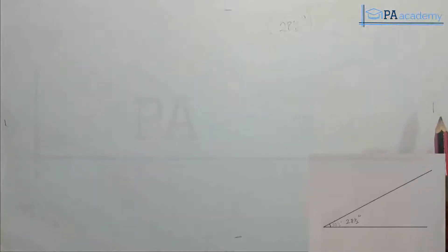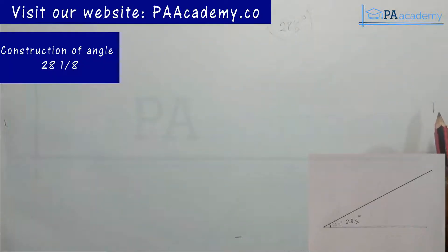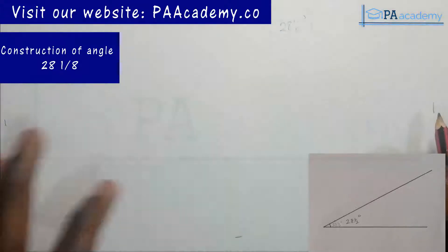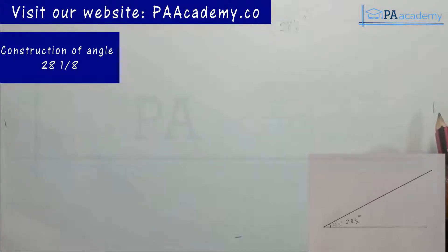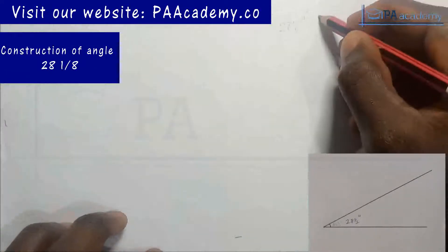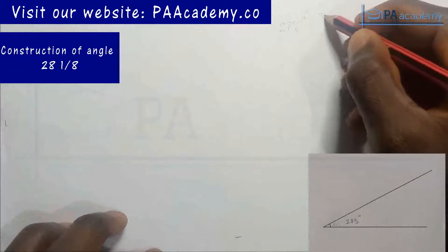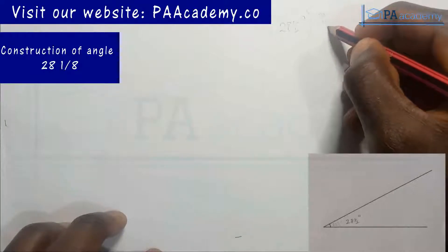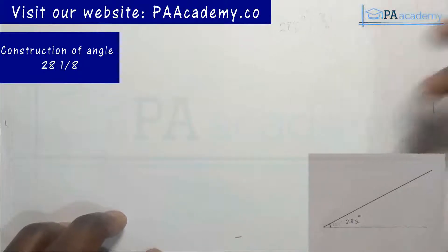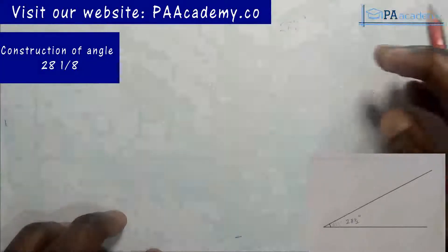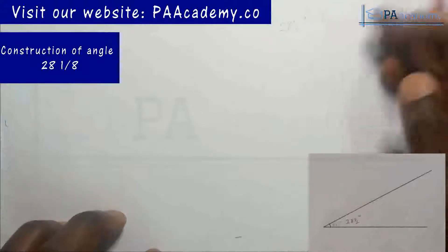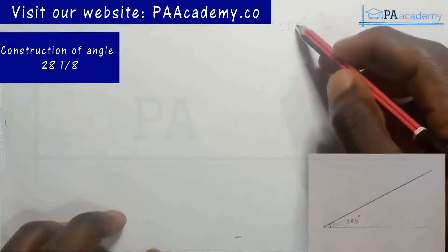Remember that this is construction — you are not asked to draw, so you will not be using a protractor at all. It's just going to be your compass, your ruler, and your pencil. Basic knowledge of angles like 30°, 45°, and 90° will be of help in constructing angles like this.